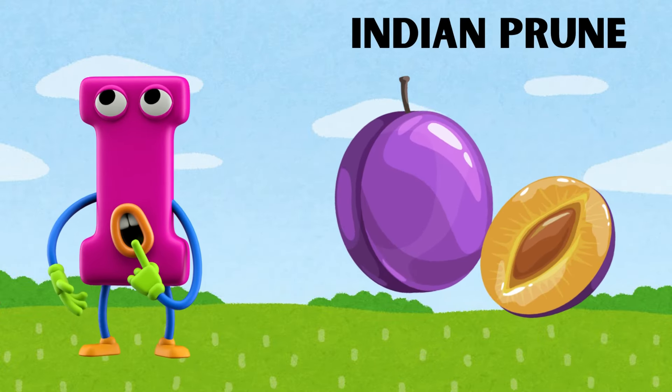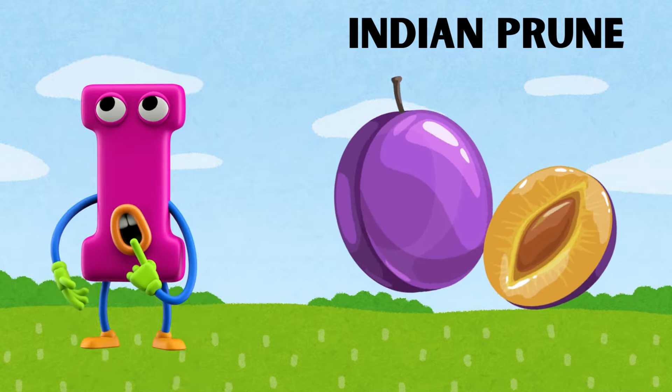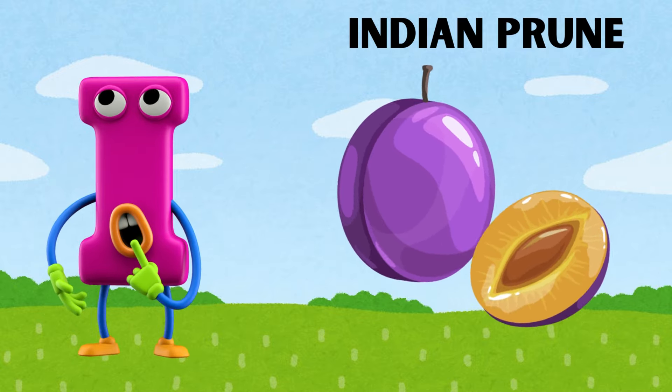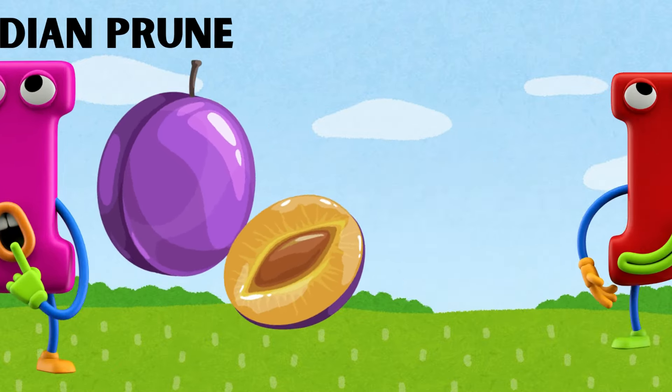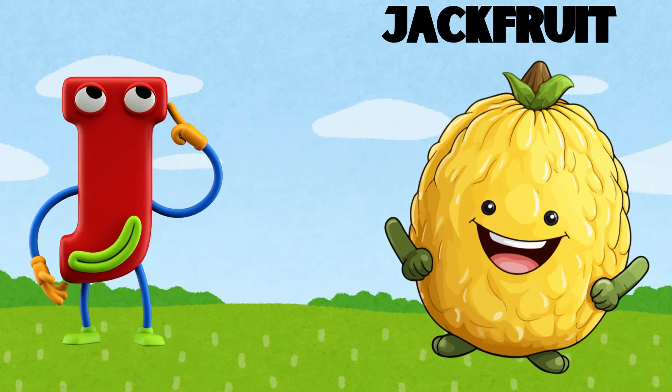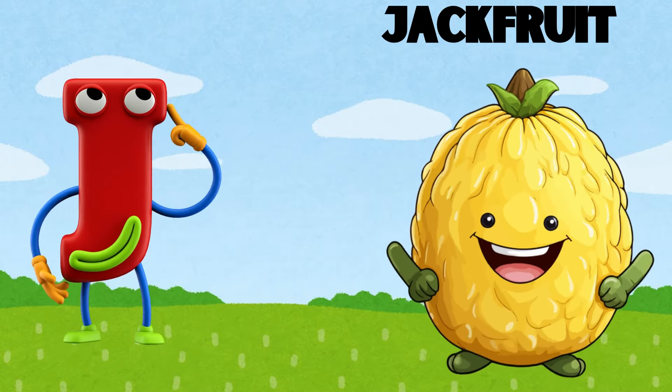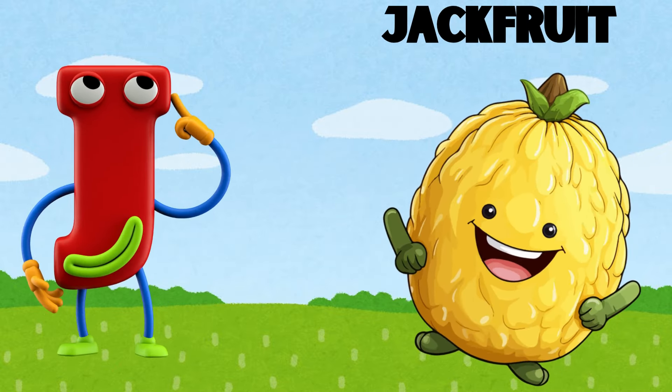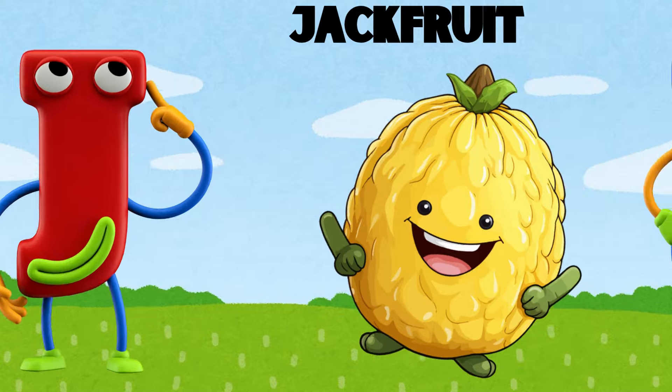I is for Indian prune, e-e-Indian prune. J is for jackfruit, j-j-jackfruit.